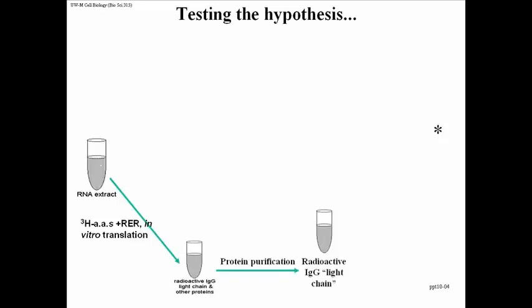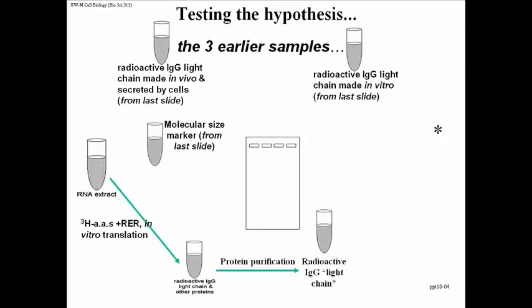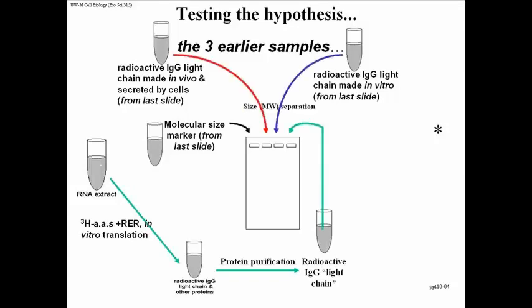We do that protein purification and throw away the RER that was there. We extract IgG light chain using the same techniques as earlier. Here's a polyacrylamide electrophoretic gel. We have radioactive IgG light chain actually made by cells — therefore the smaller size — radioactive IgG light chain made by cell-free translation without rough endoplasmic reticulum, and molecular size markers that we can get off the shelf.